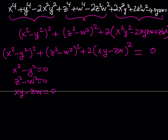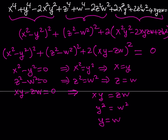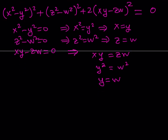Since x, y, z, w are all positive, from x² = y² we get x = y, and from z² = w² we get z = w. From the third condition x·y = z·w, substituting x = y and z = w gives y² = w², so y = w. Therefore x = y = z = w — they are all equal.